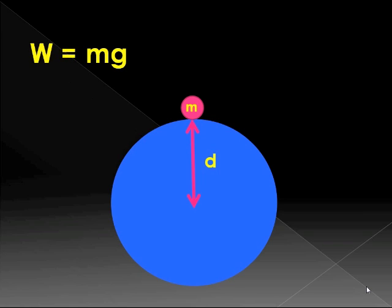We have a formula that tells us how much the earth pulls it down. W equals mg. We can find some little mass m and we know g.